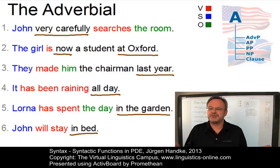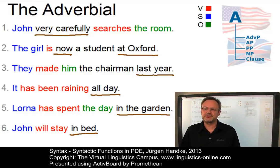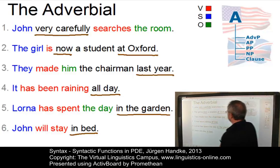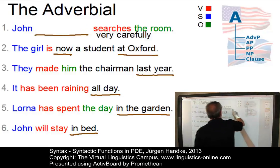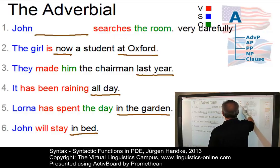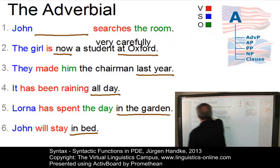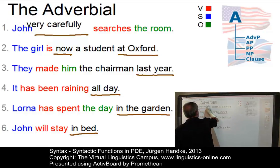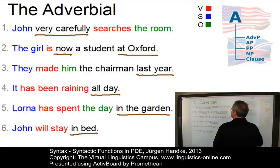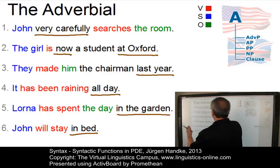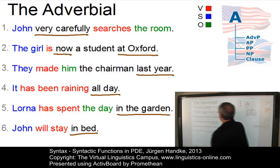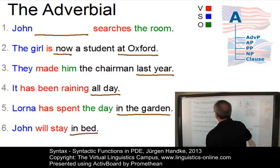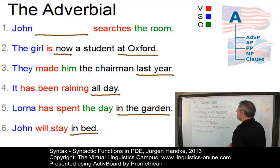The most important criterion for identifying adverbials is that they are generally mobile. For example, we can move very carefully around: we could say John searches the room very carefully, or Very carefully, John searches the room. On the other hand, adverbials can be dropped altogether, so the sentence remains fully grammatical even without the adverbial: John searches the room. You can perform the same test for all the other adverbials.